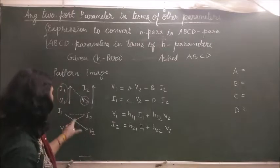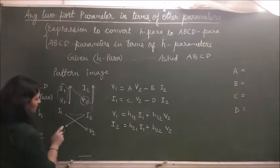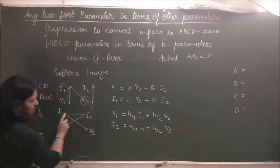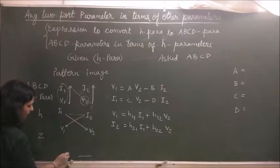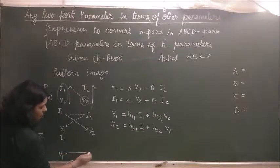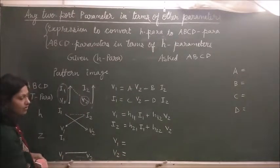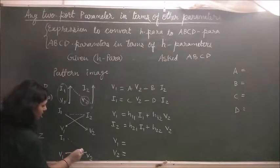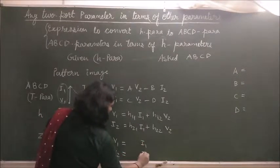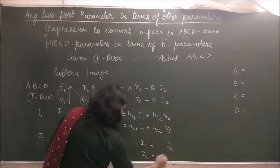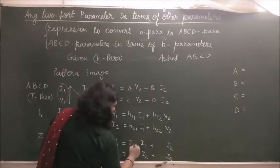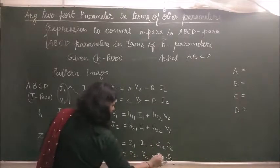Using this pattern, you start from V1 and move in the given direction. For Z parameter, again we start from V1. Move from V1 to V2 — so V1 and V2 come as dependent variables on the left-hand side. Then move from I1 to I2, so I1 comes as the first variable and I2 as the second variable. Write down Z11, Z12, Z21, Z22.